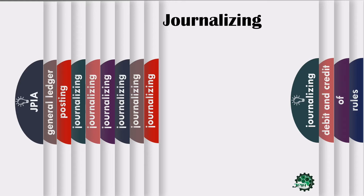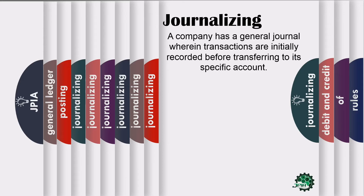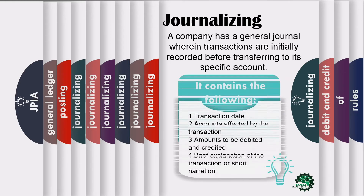At this point, you will learn how to journalize a business transaction. This is actually the second step in the accounting cycle, since the first step is the identification of events to be recorded in the journal. A company has a general journal wherein transactions are initially recorded before transferring to its specific account.